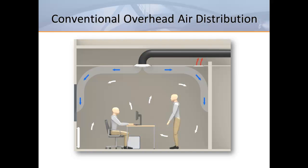It's important to note that in a system like this, the first thing our supply air does is pick up heat from the overhead lighting. This is one reason why we typically need to supply a 20-degree delta T on our supply air. We'll see in a moment why higher supply temperatures not only work well, but are actually recommended for displacement systems.